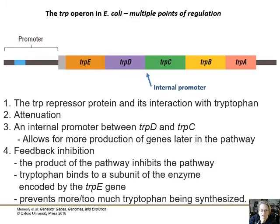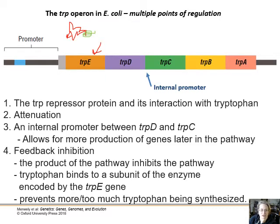There's an internal promoter between trpD and trpC which can increase production of those last three genes further along in the pathway. Finally, feedback inhibition: tryptophan, the end product, actually binds to a subunit of this enzyme. Once made, tryptophan will bind to it and prevent it from doing much of anything. This is a post-translational change where tryptophan slows down the rate the enzyme can work, also helping prevent too much tryptophan from being synthesized.